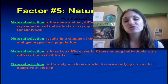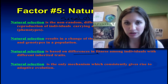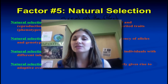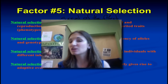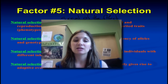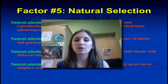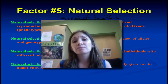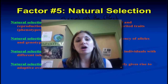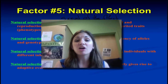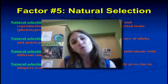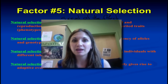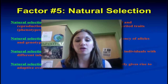Natural selection results in a change in the frequency of alleles over time, and therefore the change in genotypes over time, allowing organisms to become more suited for their environment based on differences in fitness. It's the only mechanism that consistently gives rise to adaptive evolution. Remember, natural selection isn't crafting perfect organisms — it's not a creative process, it's an editing process. It takes the variation shuffled through meiosis, random fertilization, crossing over, and sexual reproduction, and weeds out the phenotypes that aren't adapted for the environment.